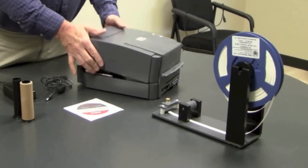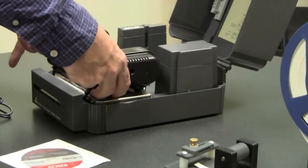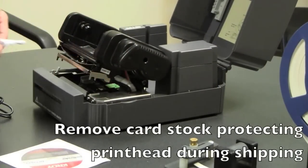You can remove the label spindle inside the printer, and you can also remove the protective cardstock over the printhead.